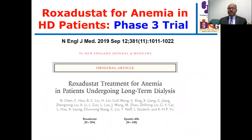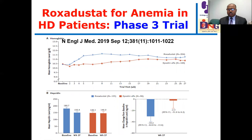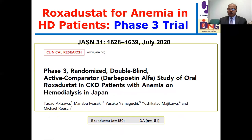For hemodialysis patients, another FIDELIO-3 trial from China evaluated roxadustat as a treatment for anemia in patients undergoing long-term hemodialysis: 200 patients on roxadustat versus 100 patients on epoetin alpha. There was a significant reduction of hepcidin and improvement of anemia management. Both trials in CKD and dialysis patients confirm the efficacy of roxadustat. Additionally, a Japanese phase 3 randomized double-blind active comparator darbepoetin-alpha study in CKD patients on hemodialysis with 150 patients per arm showed roxadustat was non-inferior to darbepoetin-alpha.